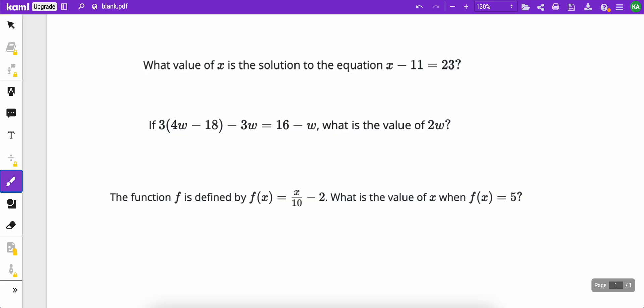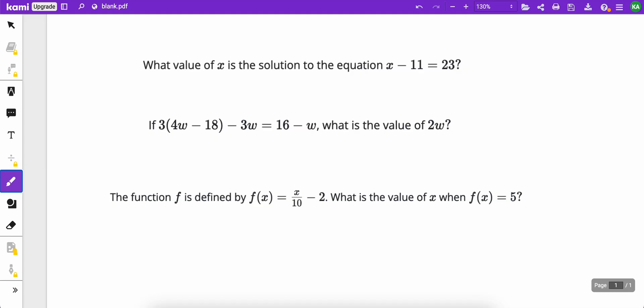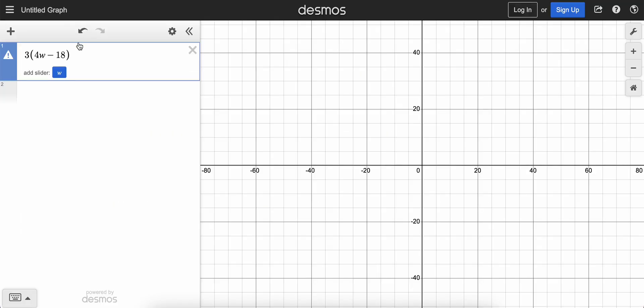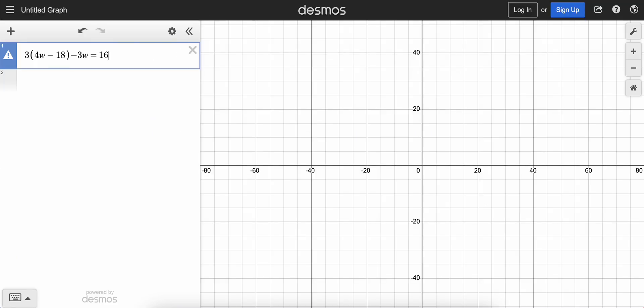Now what if we have something even more complicated? 3 times 4w minus 18, that whole equation. Why don't we type that in? This is a little bit tedious at first, but it's probably easier to do it this way than to solve it out ourselves. So 3 times 4w minus 18, minus 3w, and then it says equals 16 minus w.